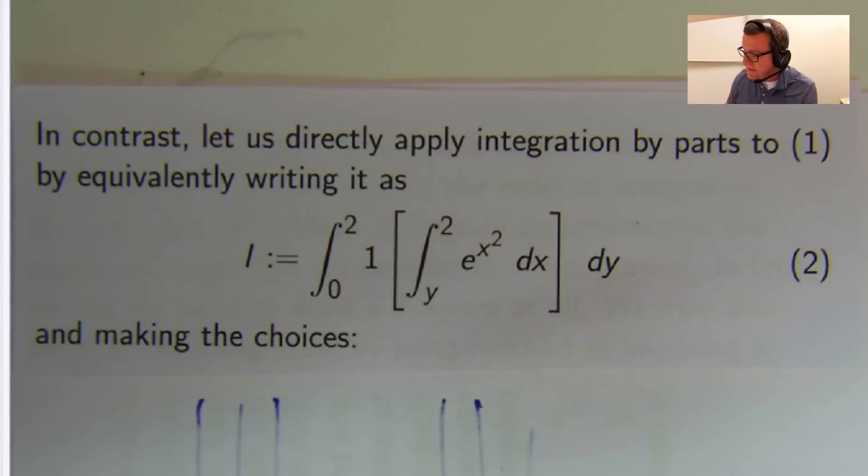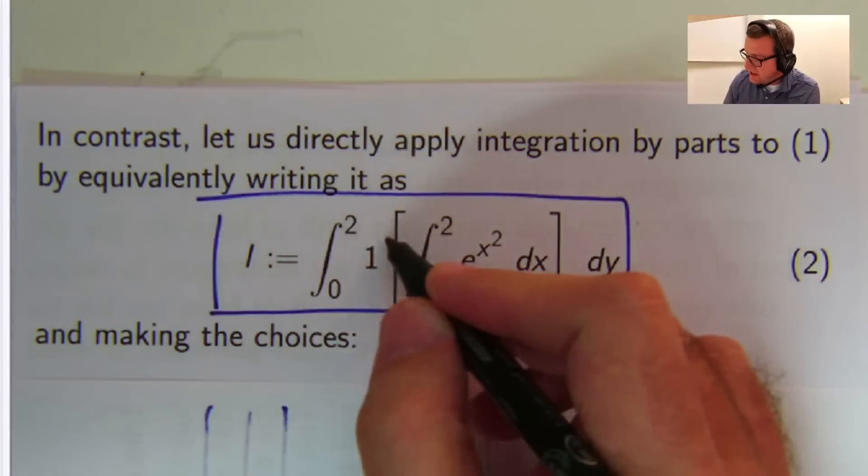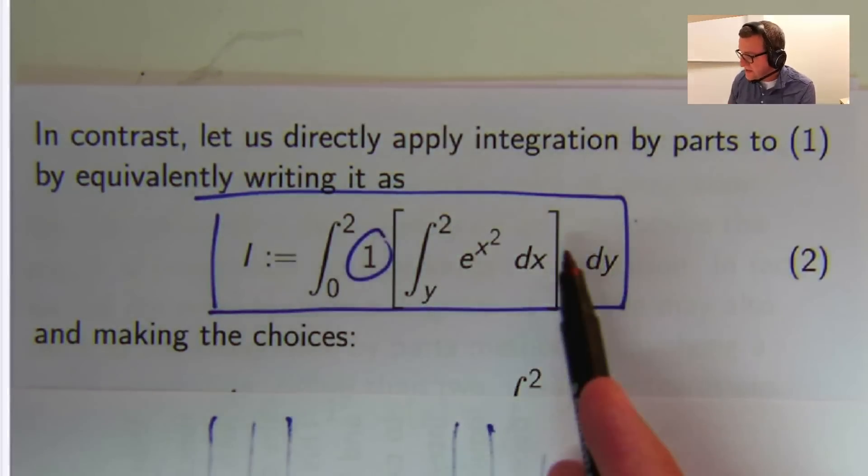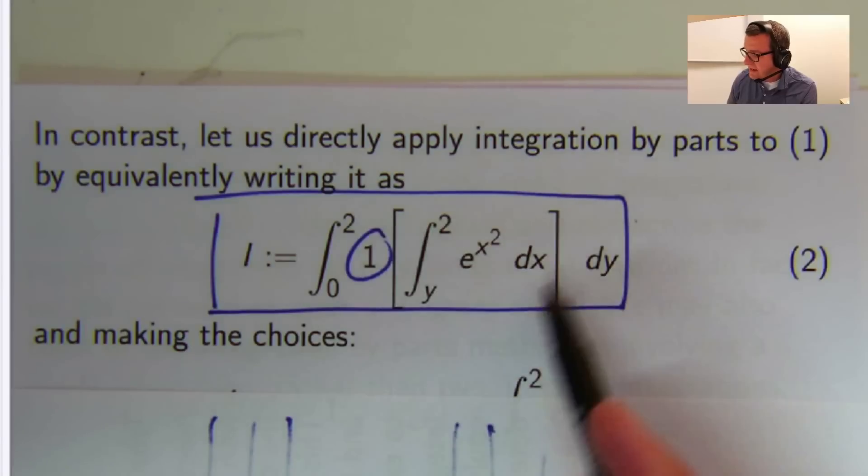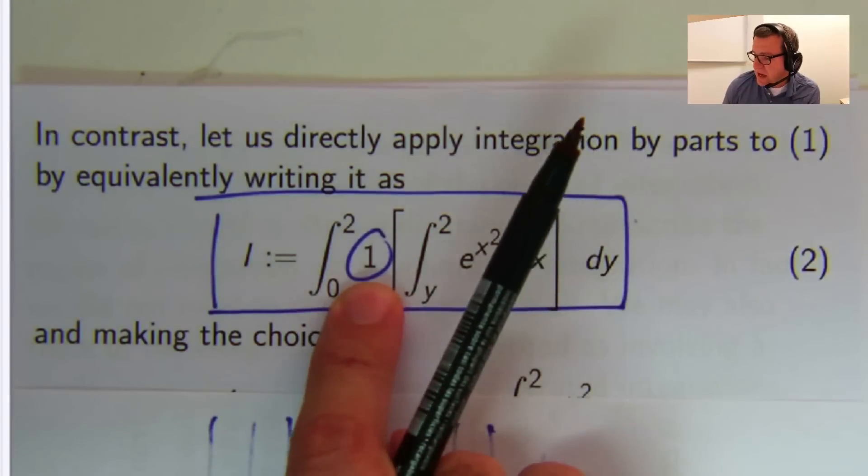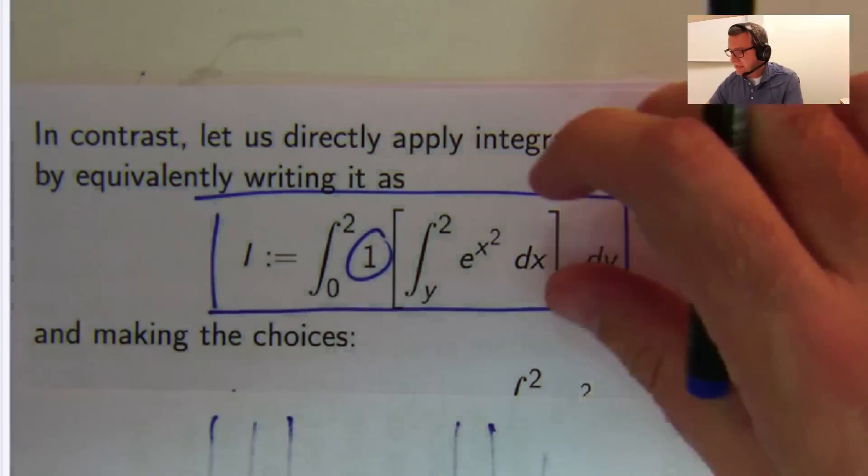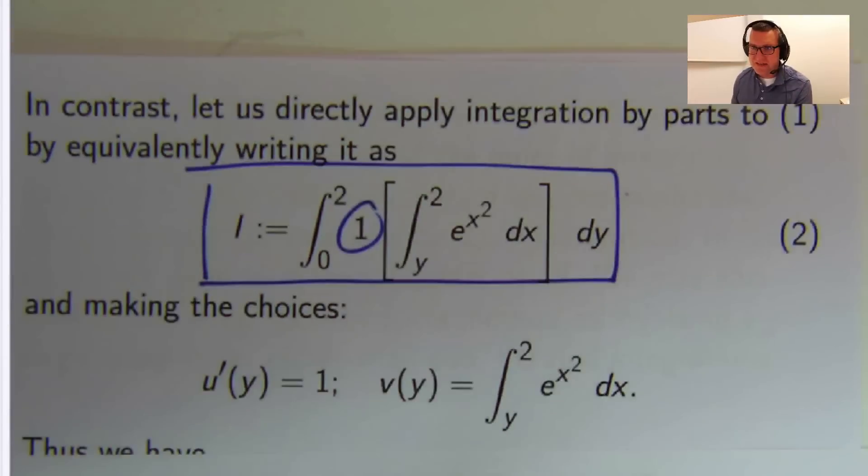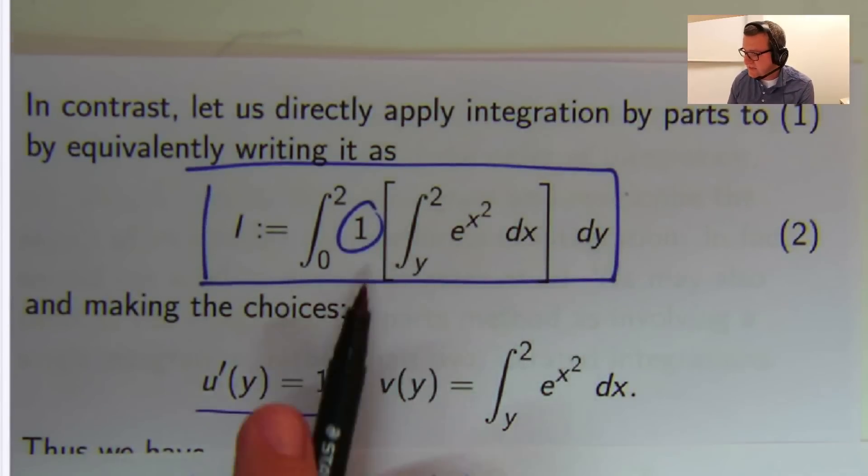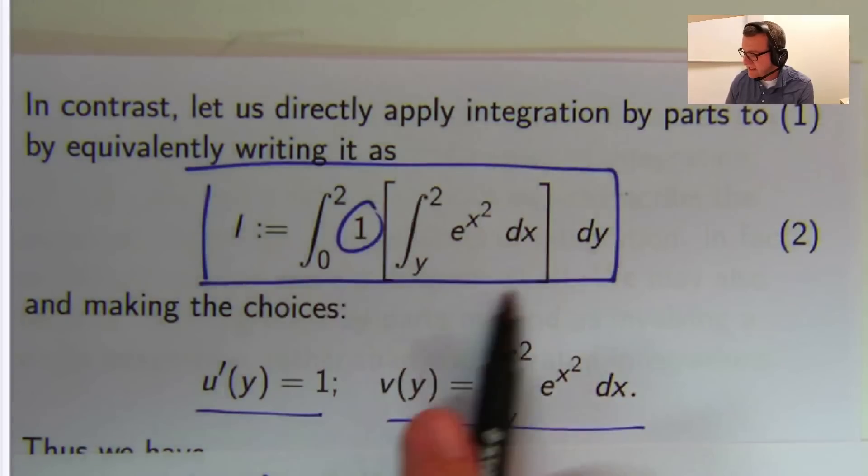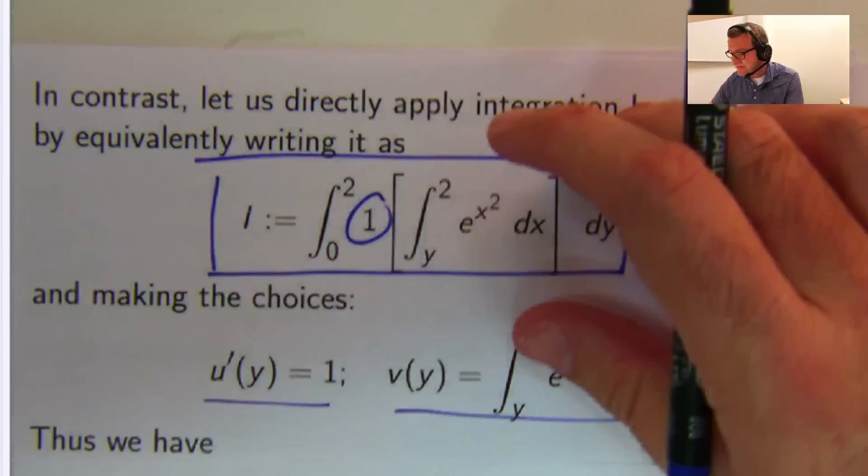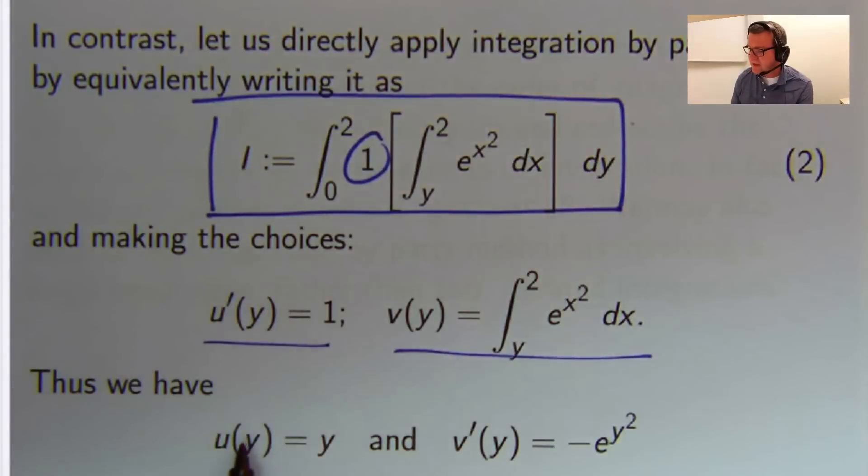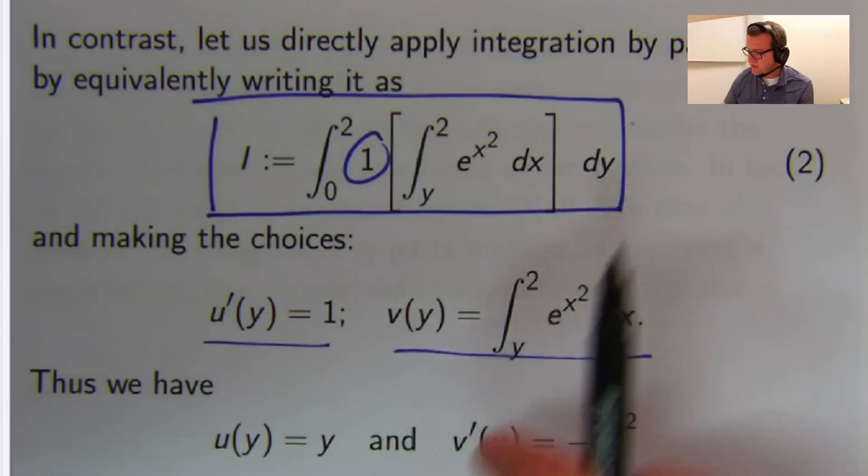And one key element here is to insert a factor of 1. So think of the thing inside this inner bracket as a function of y, that's one sort of function. And then you've got this other sort of function here, this constant function 1. So we insert that factor of 1. We let u-dash be that one, we let v be this thing in the square brackets, and you apply integration by parts. So if that's u-prime, u will be that, and if that's v using the fundamental theorem of calculus, you can differentiate that.